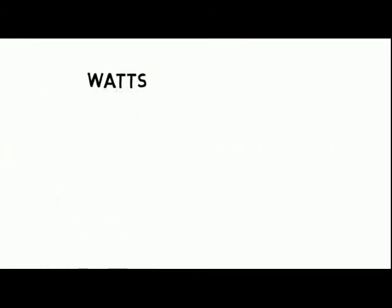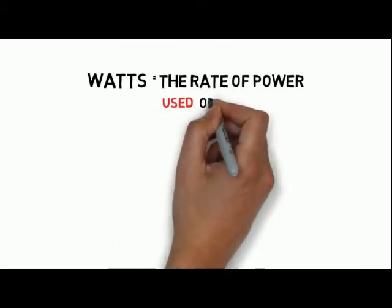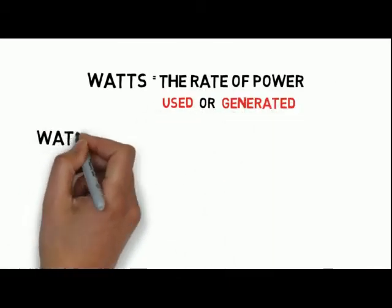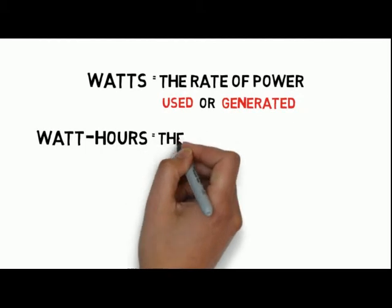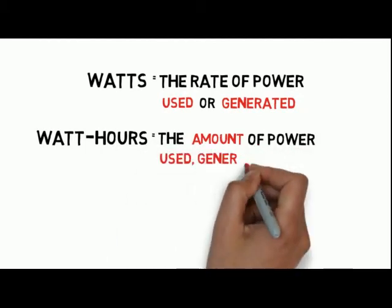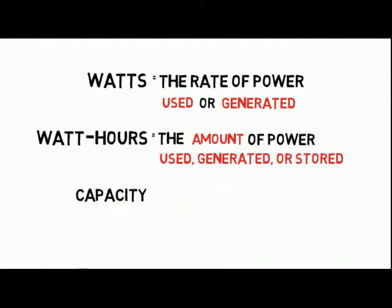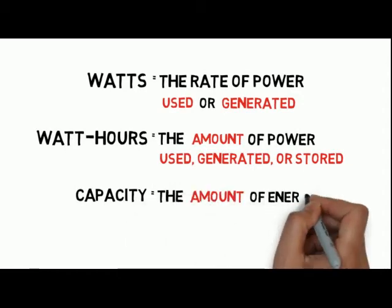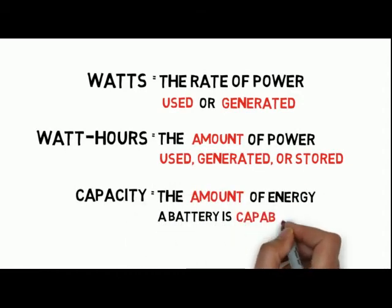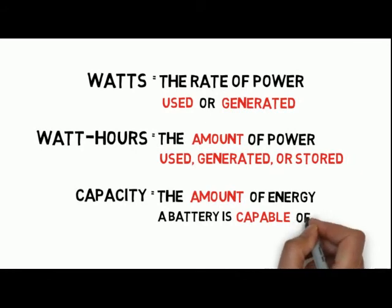In summary, watts is the rate of power used or generated, watt hours is the amount of power used, generated, or stored, and capacity is the amount of energy a battery is capable of storing.